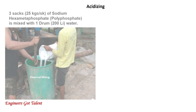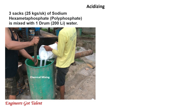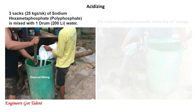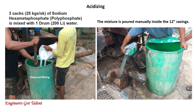Acidizing breaks up hardened bentonite from bottom to top of the well and is another method of well cleanup. The chemicals used were a mixture of 3 sacks, 25 kilograms per sack, of sodium hexametaphosphate or polyphosphate, mixed with 1 drum of 200-liter water. This formulation is for a 150-meter depth well. The mixture is manually poured into the well and let it soak for 12 hours.